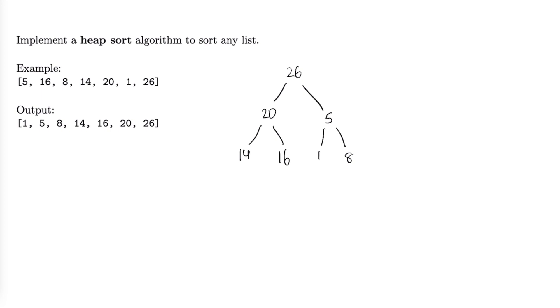So 26 is now the root and 5 is now where 26 was. We have to continue sifting down 5 until we have a heap. So 5 is going to switch with 8 — we'll put an 8 here and a 5 here. And that's all we have to do for this step. Now we have a heap.